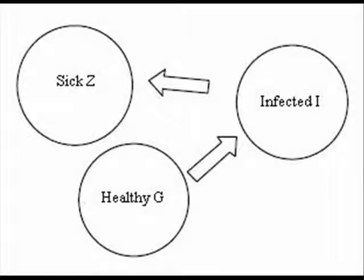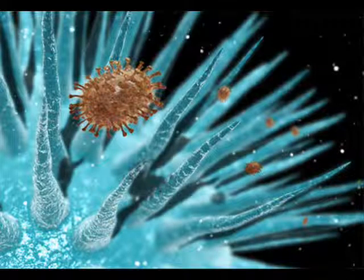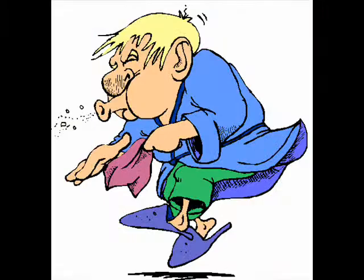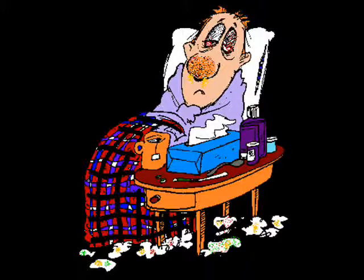It's a pretty simple model that works surprisingly well. It basically says we have three groups of people: the healthy, the infected, and the sick. Let's take the flu as an example. The healthy are persons not infected with the virus. The infected are persons who have the flu virus but aren't sick yet — they live their everyday life but can infect healthy persons by sneezing. After a certain incubation time, an infected person gets ill and stays in bed, no longer infecting others.